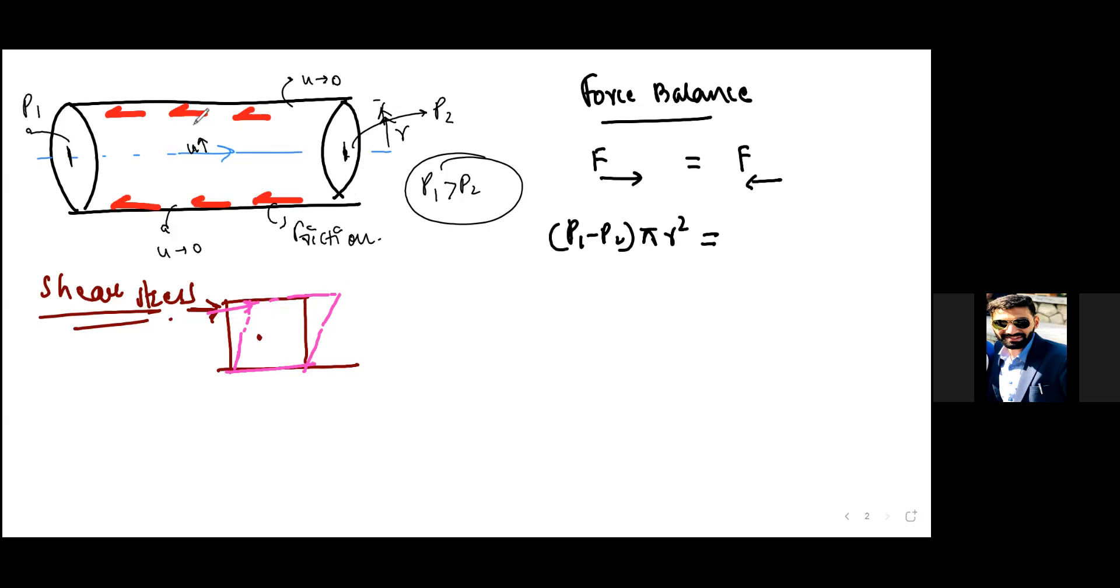So basically shear stress to make it very simple in this use case is basically the one which is opposing our flow direction and it is basically acting on the walls. Because it's a stress it is always acting on an area, because stress is always force per unit area.